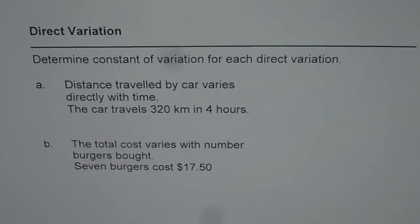A is, distance travelled by car varies directly with time. The car travels 320 km in 4 hours. The second one is, the total cost varies with number of burgers bought. 7 burgers cost $17.50.